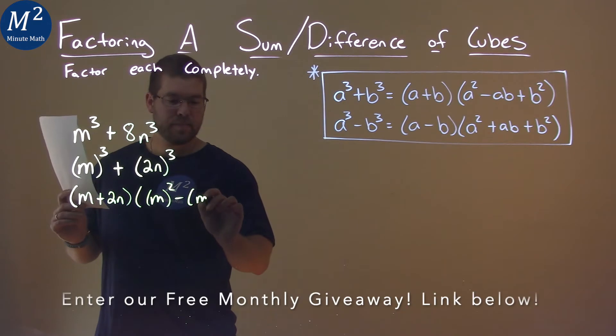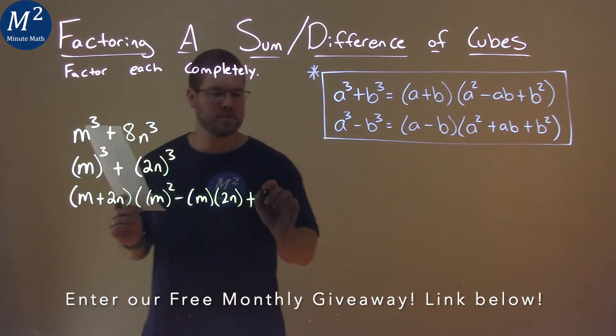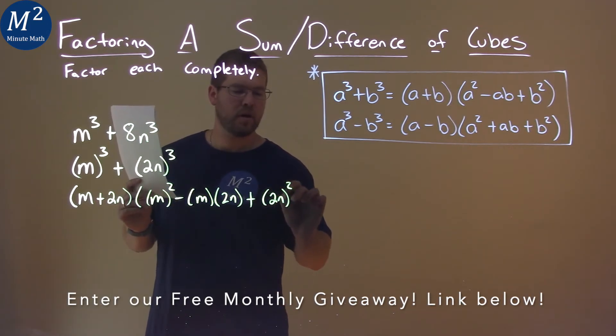Well, a being m again, times b, 2n, plus our b value, which is 2n, all squared.